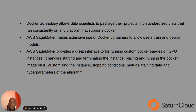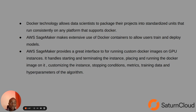So what is Docker? Docker is a technology that allows data scientists, developers, and machine learning engineers to package their projects into standardized units that run consistently on any platform that supports Docker. Amazon SageMaker is a cloud machine learning platform that enables developers to create, train, and deploy machine learning models in the cloud. It makes extensive use of Docker containers to allow users to train and deploy their models, and also provides a great interface for running custom Docker images on GPU instances.